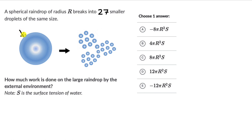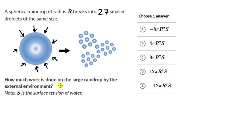The external environment might be applying force on this large raindrop, causing it to change into 27 smaller droplets. When the droplet was large, there was some surface energy associated with it, and similarly when the droplets are small, there will be surface energy associated with them. We can use the work-energy principle and say that work done equals change in energy.